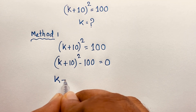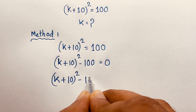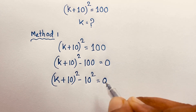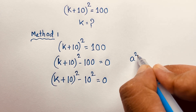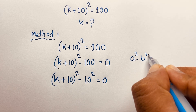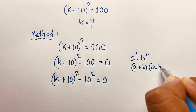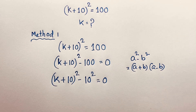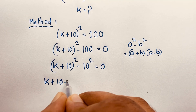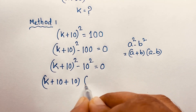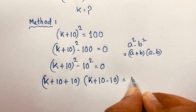You can see that (k + 10)² - 10² = 0. If you think this is a and this is b, we know that a² - b² = (a + b)(a - b). If I apply this math formula here, it will be (k + 10 + 10)(k + 10 - 10) = 0, where a is (k + 10) and b is 10.